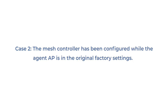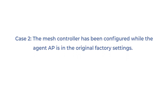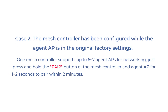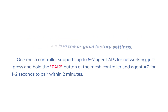Case 2: the mesh controller has been configured while the agent AP is in the original factory settings. One mesh controller supports up to 6–7 agent APs for networking. Simply press and hold the pair button of the mesh controller and agent AP for 1–2 seconds to pair within two minutes.